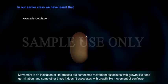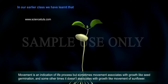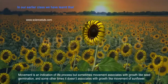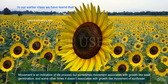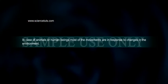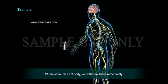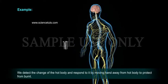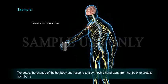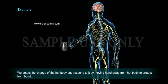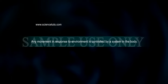In our earlier class we learned that movement is an indication of life process, but sometimes movement is associated with growth like seed germination, and other times it doesn't associate with growth, like the movement of a sunflower. In animals or human beings, most movements are in response to changes in the environment. For example, when we touch a hot body we withdraw our hand immediately — we detect the change and respond by moving our hand away to protect from a burn. Any movement in response to the environment is controlled by a system in the body.